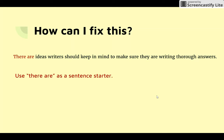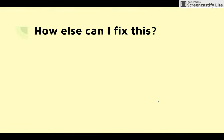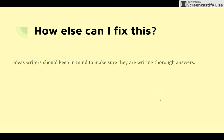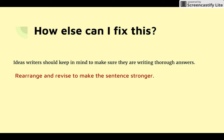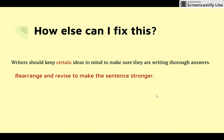So that would become: 'There are ideas writers should keep in mind to make sure they are writing thorough answers.' How else can I fix this? If I rearrange and revise to make the sentence stronger — writers are the people doing the action, so I want to make them the subject: 'Writers should keep certain ideas in mind to make sure they are writing thorough answers.' The more claims you write, the better you will get at making these kinds of revisions.